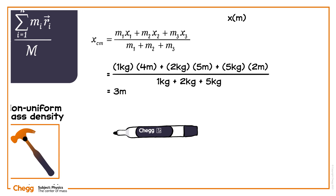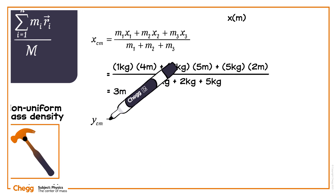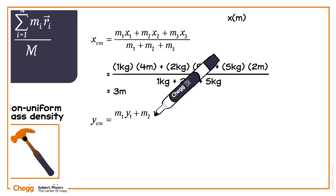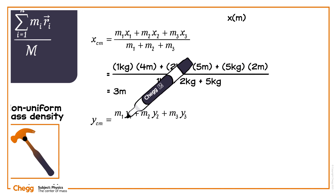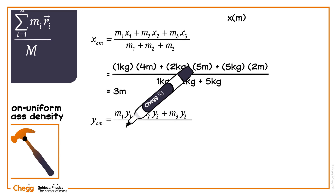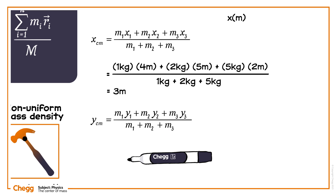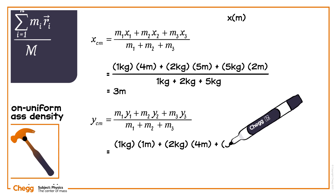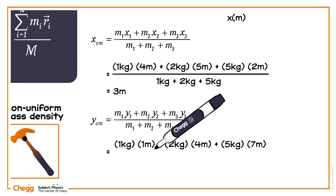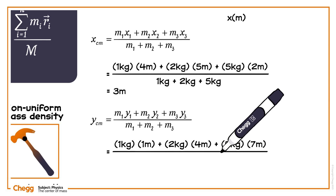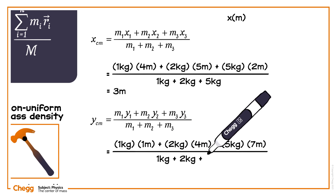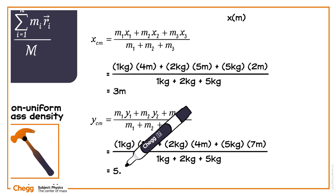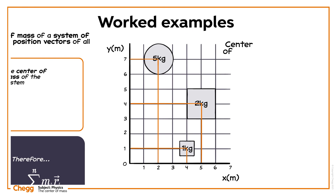Now find the y-coordinate of the centre of mass using the y-coordinates of the given masses. y_cm equals m1·y1 plus m2·y2 plus m3·y3, divided by m1 plus m2 plus m3, which equals 1 kg × 1 m plus 2 kg × 4 m plus 5 kg × 7 m, divided by 1 kg plus 2 kg plus 5 kg, which equals 5.5 m. Hence, the centre of mass of the system is at (3 m, 5.5 m).